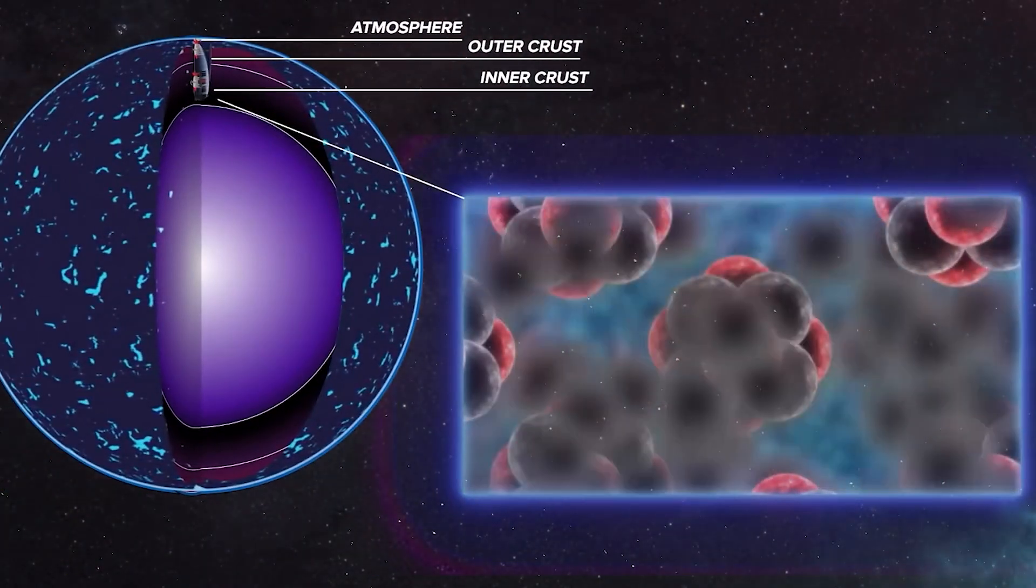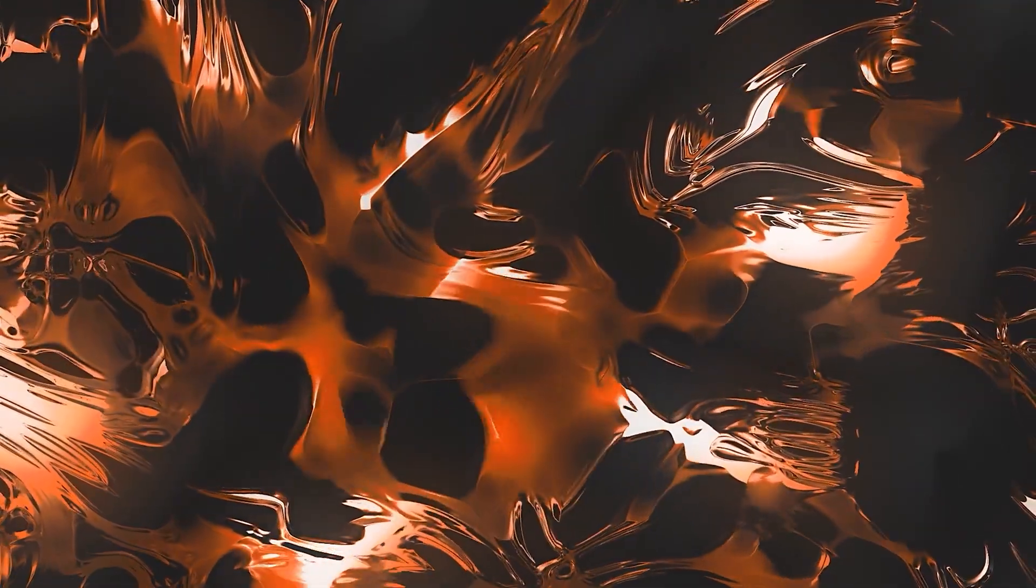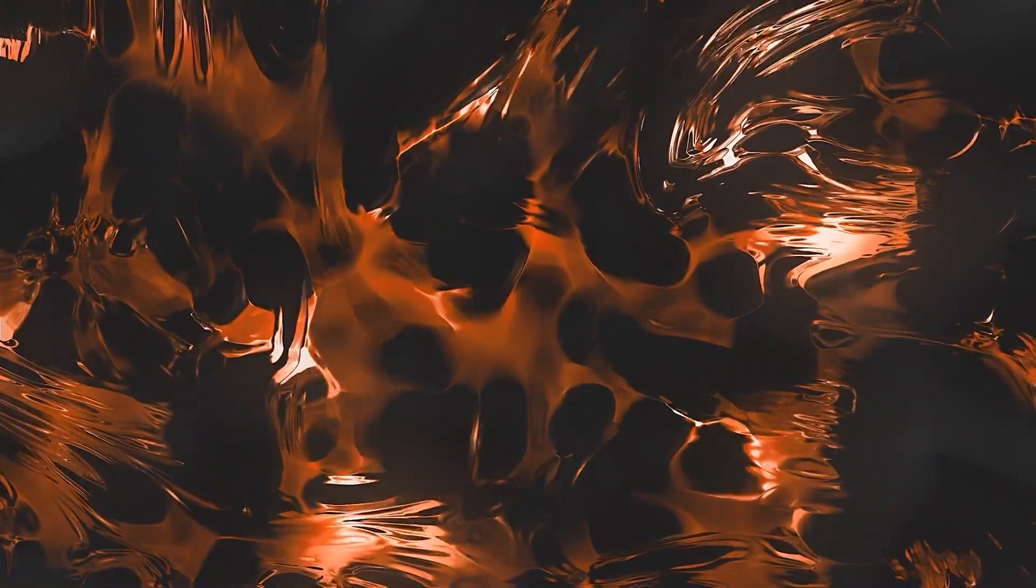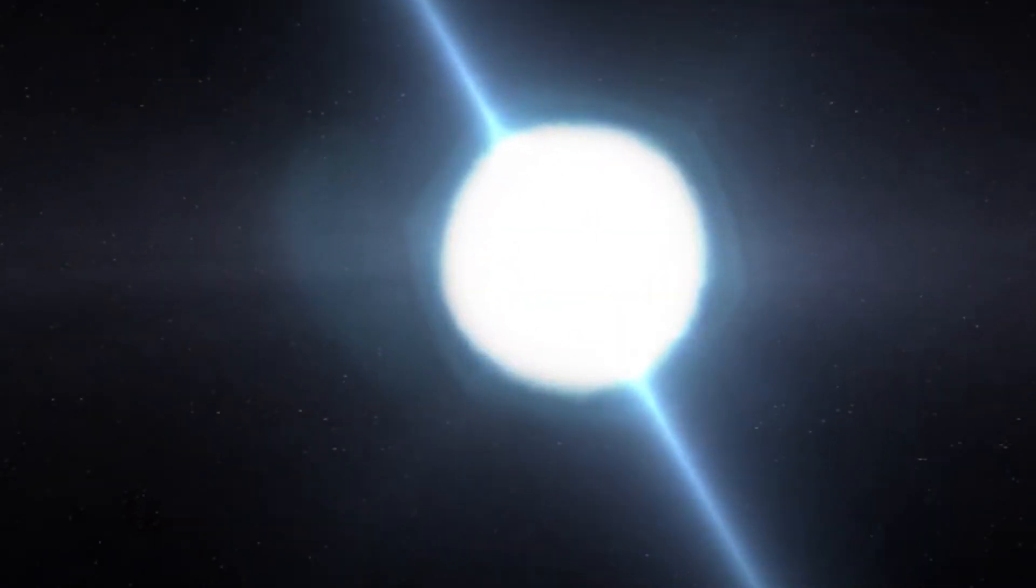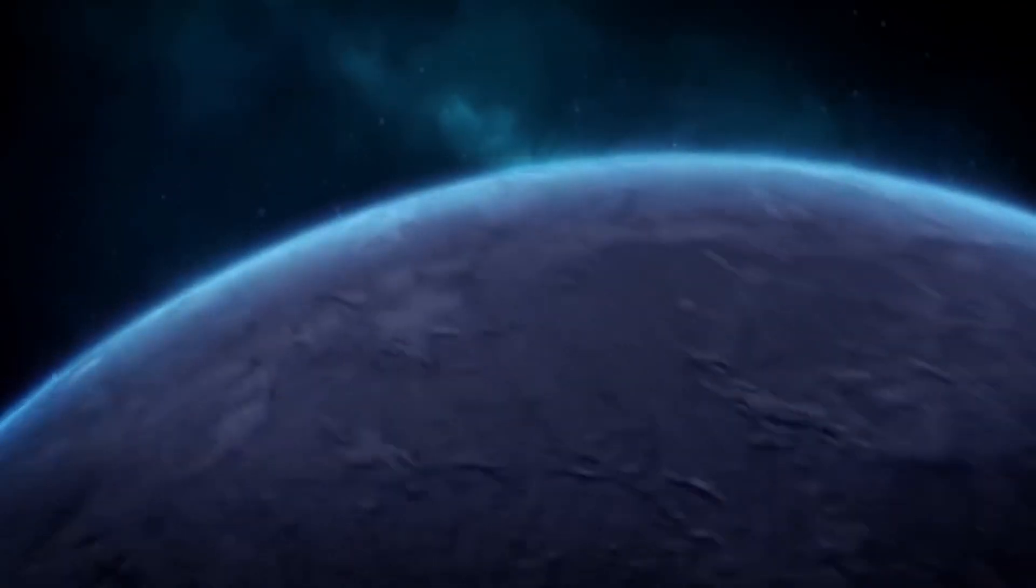The interior of a neutron star is believed to be composed of neutrons, quarks, and other exotic states of matter, like Bose-Einstein condensates, forming a superconducting fluid. As the star rotates, it acts like a massive dynamo, producing a substantial amount of magnetic energy.